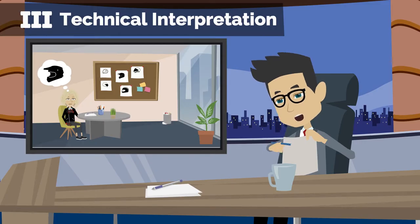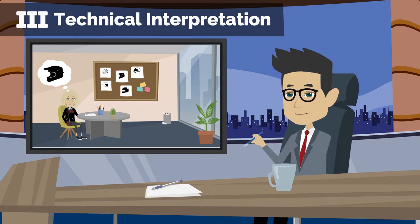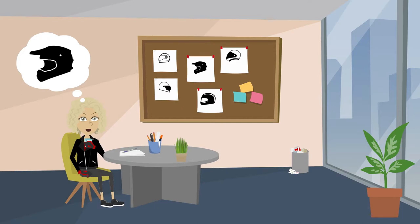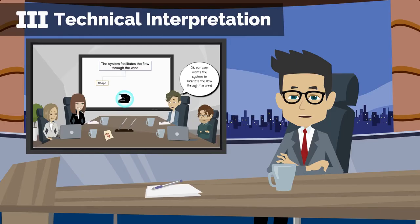Let's consider now a more complex example. In our interview, user expressed the need of having a helmet that makes less force backwards with the speed. I would like to make less effort in my neck, as the helmet pushes my head backwards while riding at high speeds. This need was interpreted as: the system facilitates the flow through the wind.